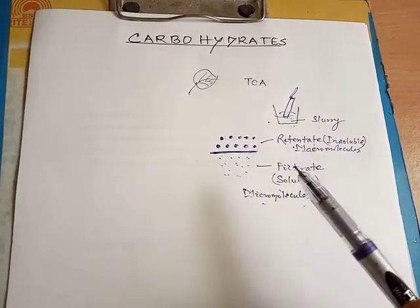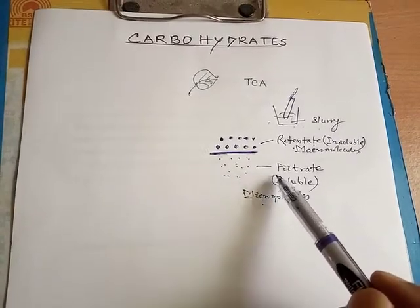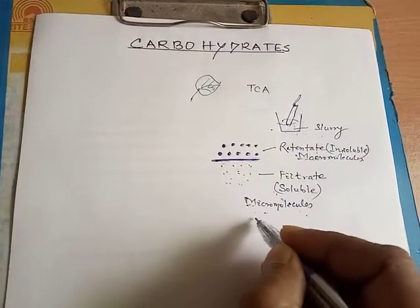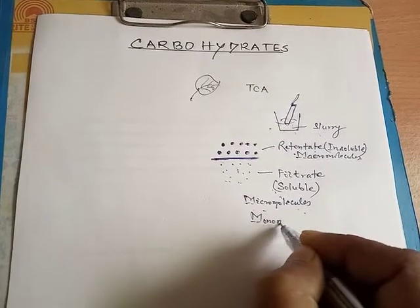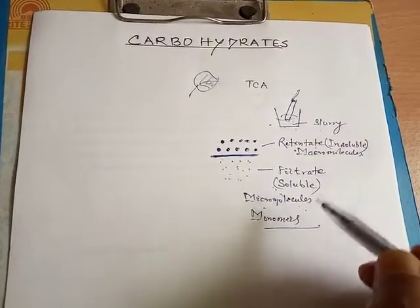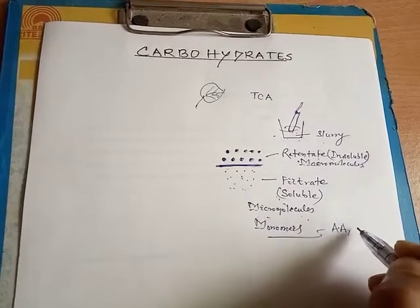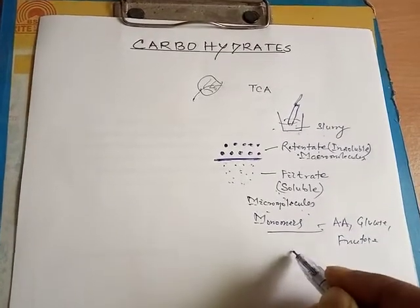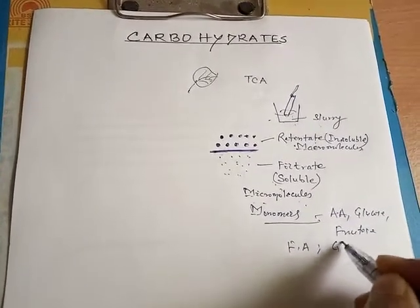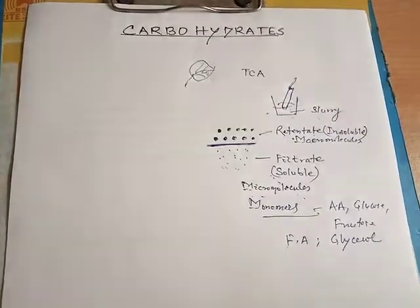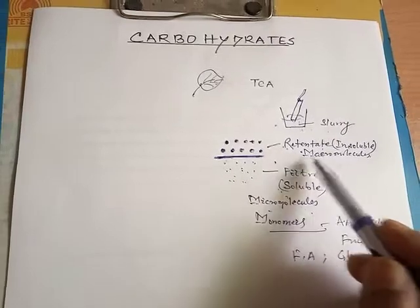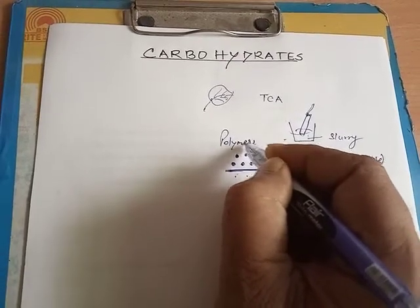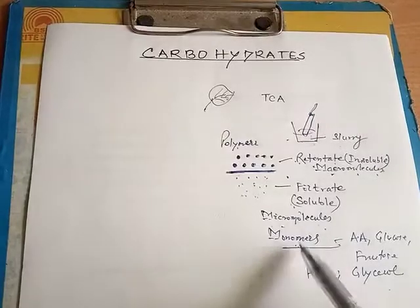We also discussed that the acid soluble fraction would contain micromolecules, which may contain monomer units like amino acids, glucose, fructose, fatty acids, glycerol, etc., whereas the retentate contains macromolecules which are polymers of these monomer units.